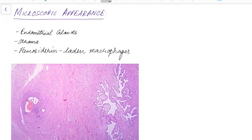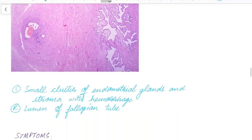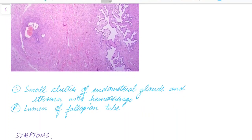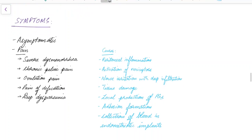Microscopically, endometriotic tissue contains endometrial glands and stroma along with haemosiderin-laden macrophages. This picture shows a small cluster of endometrial glands and stroma with hemorrhage. This image shows endometrial glands and stroma present in the lumen of a fallopian tube — outside the uterus.